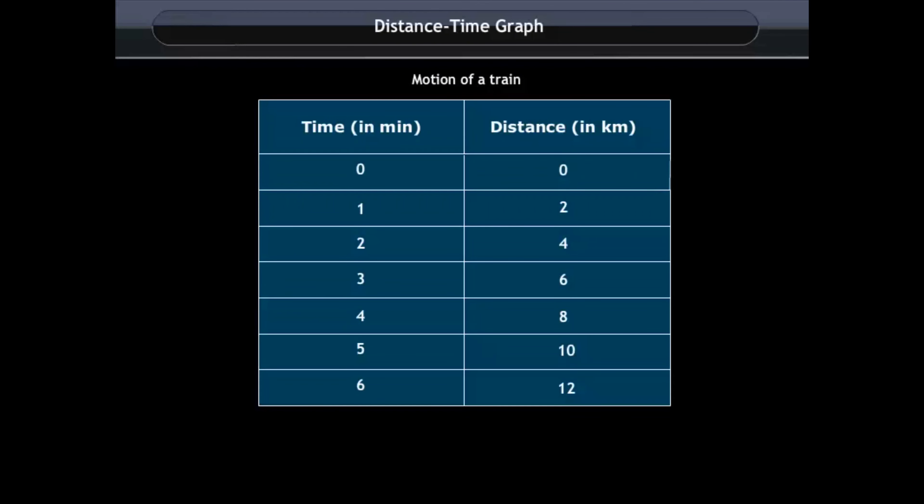Now let us make a distance time graph. Here we have some data of motion of a train. In the graph, the horizontal line represents time and the vertical line represents distance.